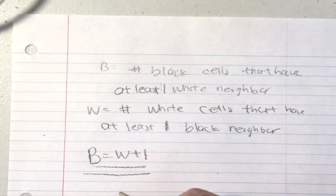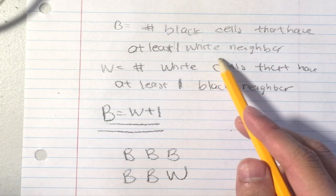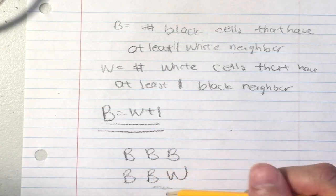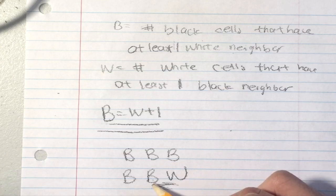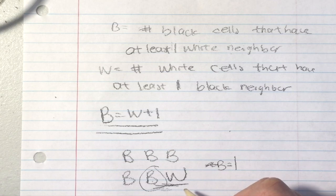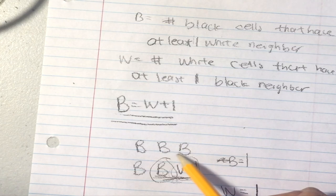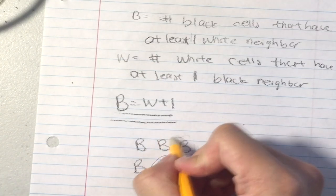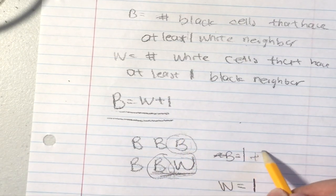This case occurs when you have all black cells except for one white cell in a corner. The number of black cells that have at least one white neighbor: there's the one adjacent to the white cell, so B starts at one. Now for the white cell, it has one black neighbor beside it, but also one above it — remember, adjacent means directly above, below, or to the side, not diagonal. So the black cells with a white neighbor count is actually two: one on the side and one above. That gives B equals two.